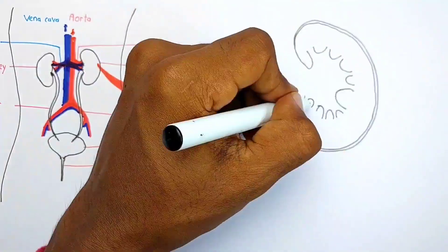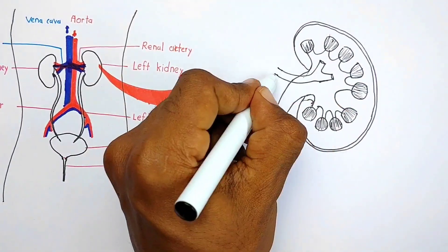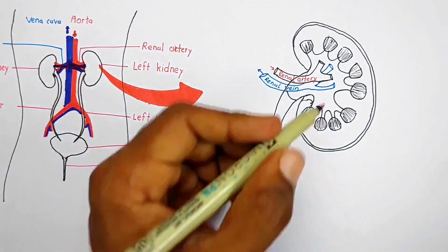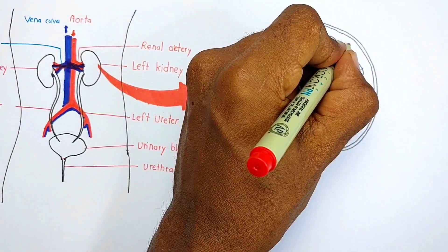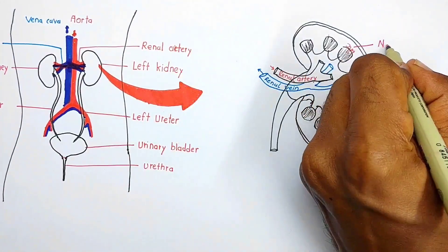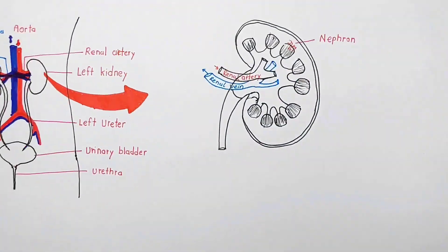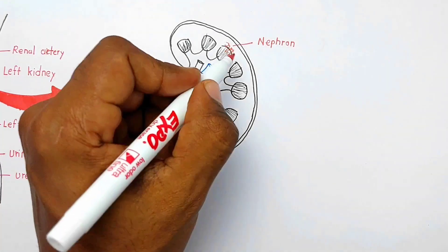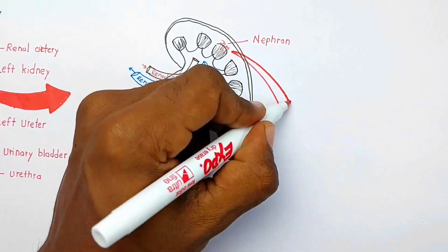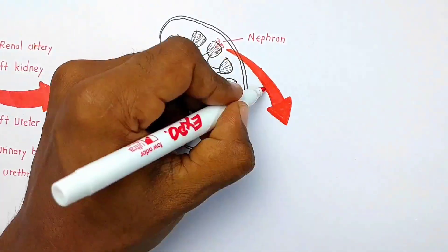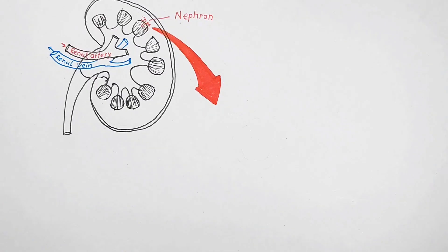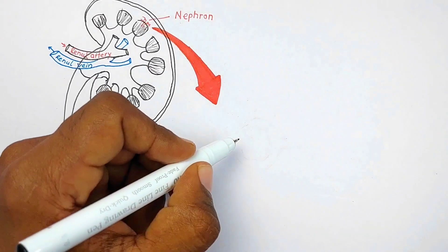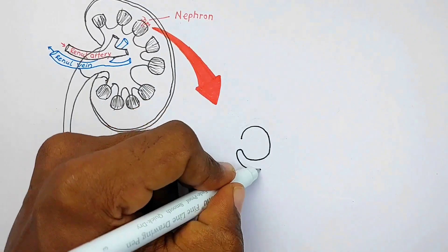If we look at the longitudinal section of the kidney, inside the kidney is what's called the nephron. The nephron is the structural and functional unit of the kidney, and each kidney has one and a half million nephrons. Now let's zoom into one nephron and see how it filters waste from the blood and produces urine.